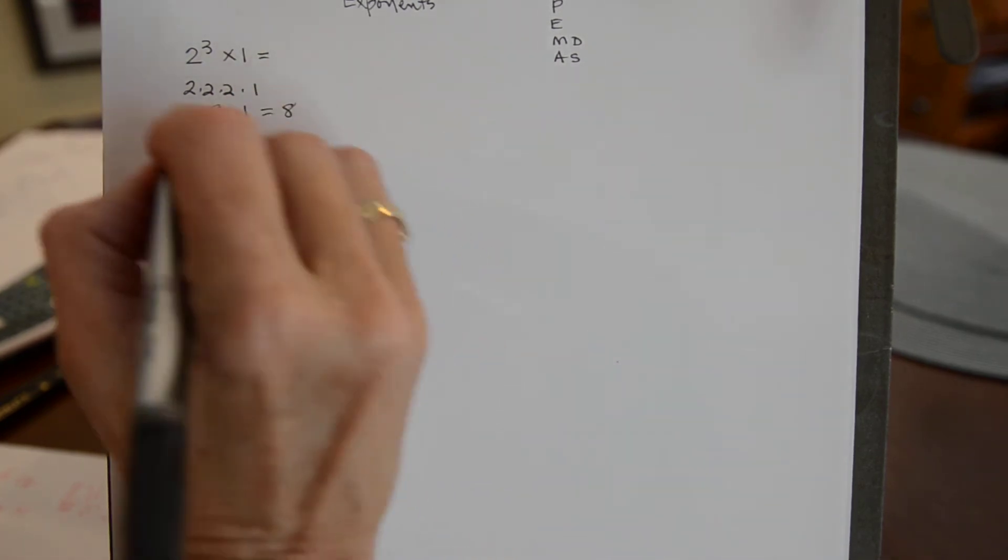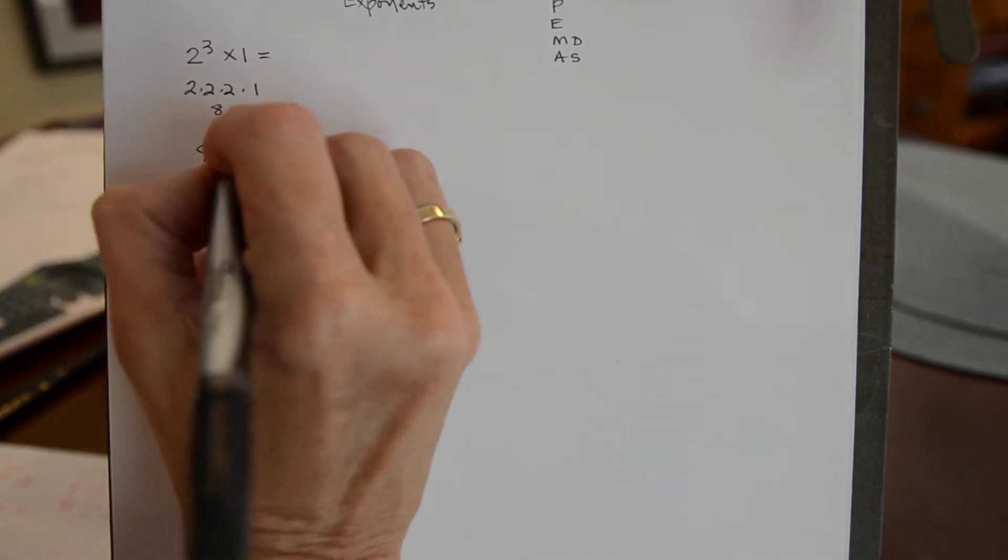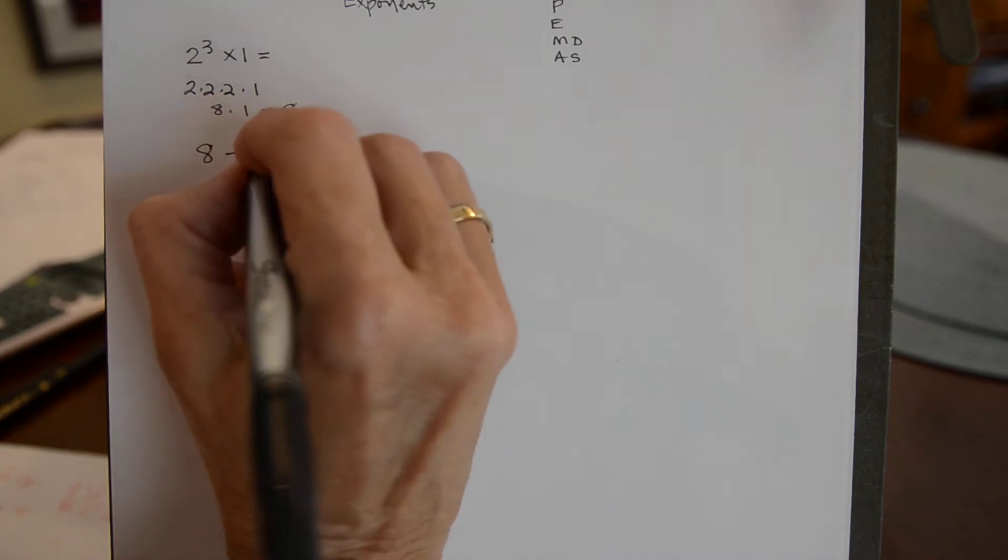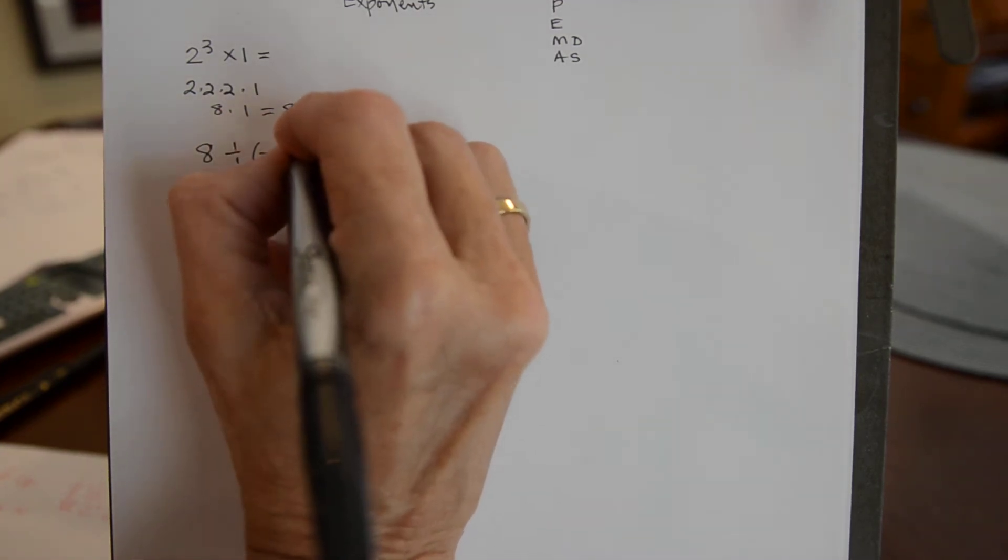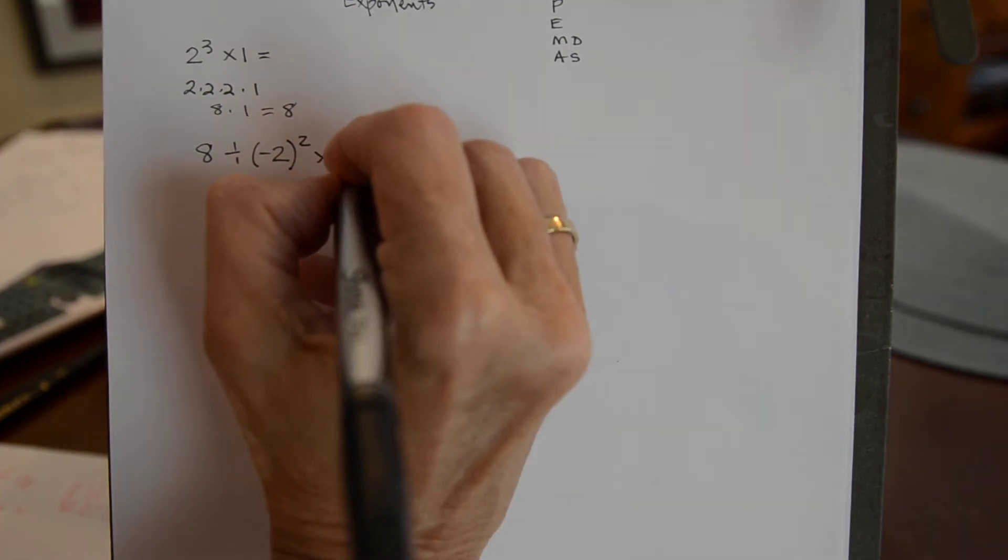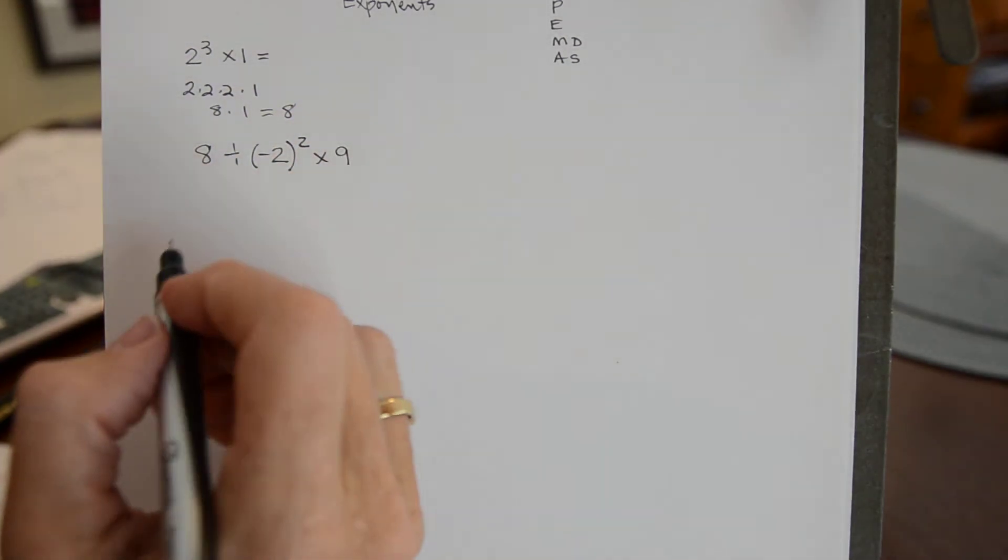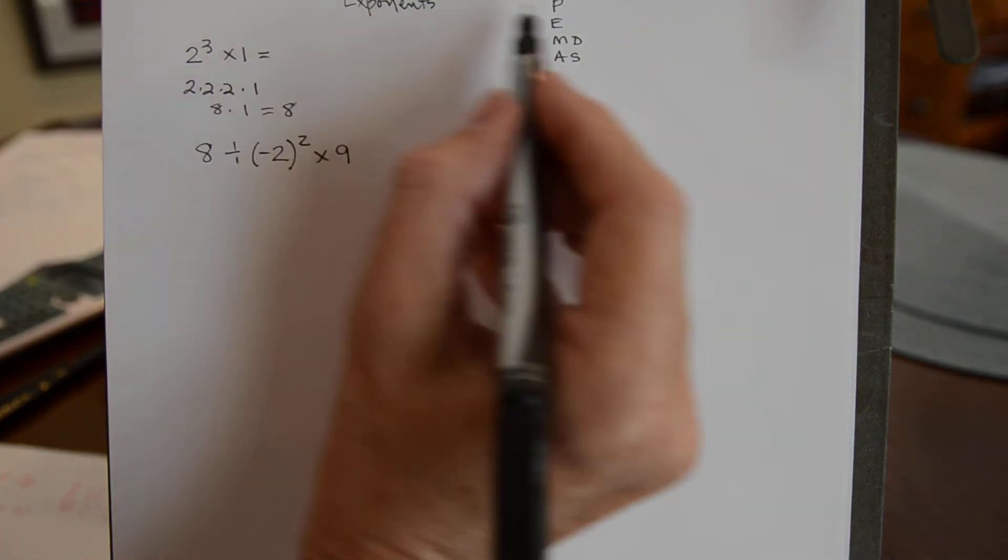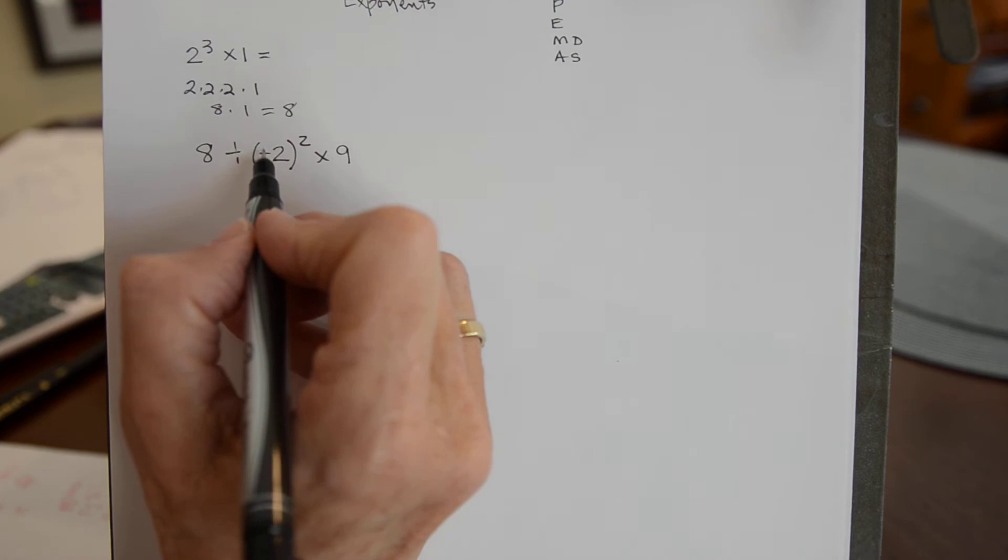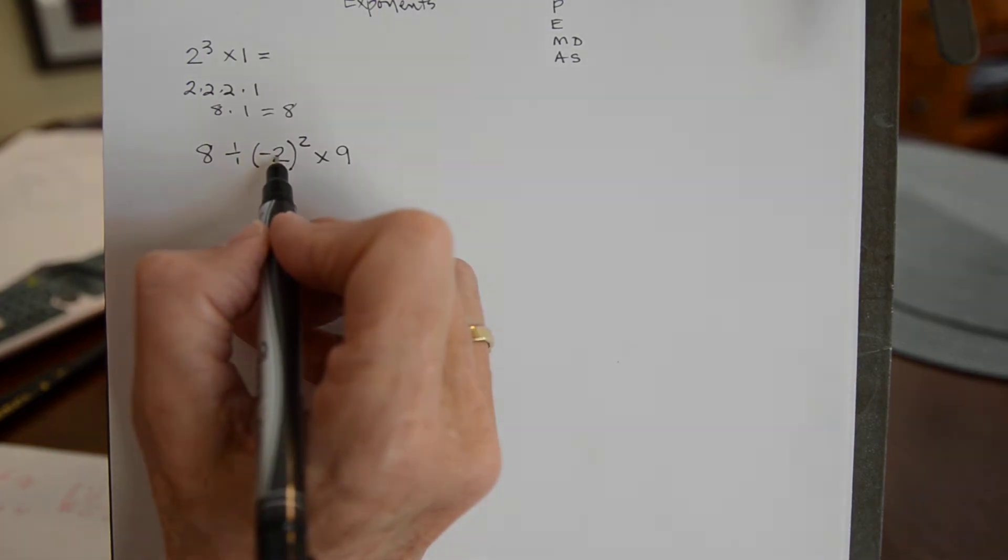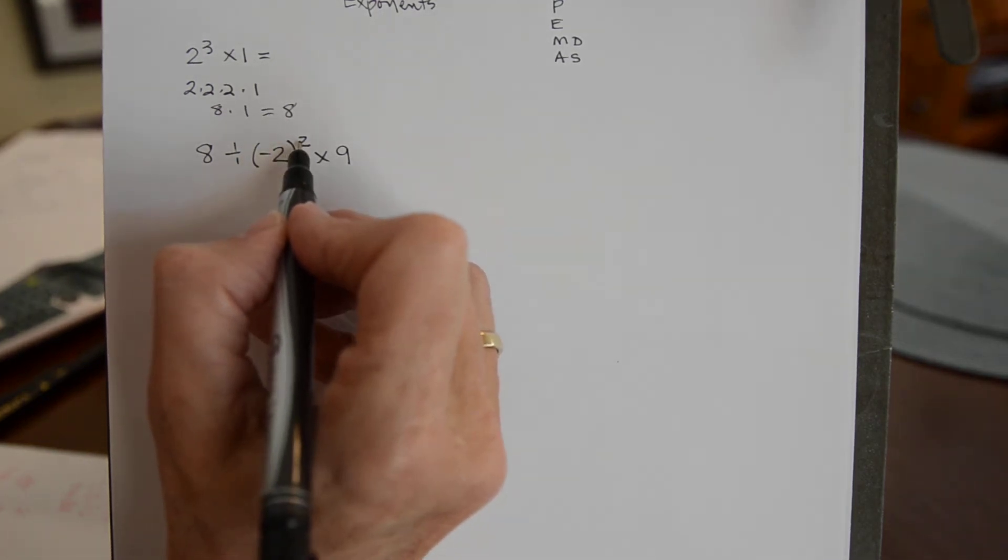Then I have 8 divided by parentheses negative 2 closed parentheses exponent 2 times 9. So this tells me that I should do anything inside the parentheses first but there's nothing to do. That's just telling me keep this negative sign attached to this number 2 when you square it.